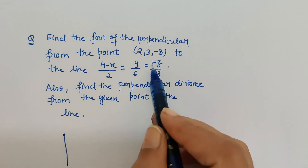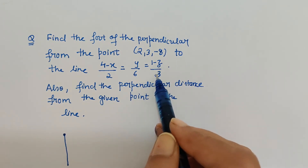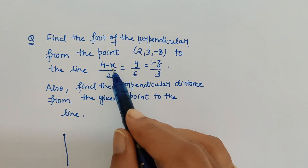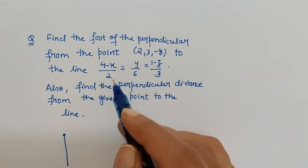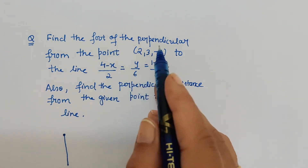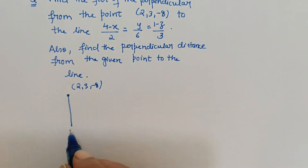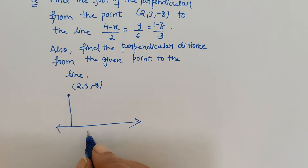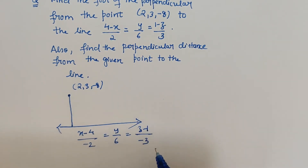To rewrite in standard form, '1 - z' should become 'z - 1', which is possible only by taking the minus sign out, so minus will come in the denominator. Similarly, '4 - x' becomes 'x - 4' with minus 2 in the denominator. So the Cartesian equation of the line becomes (x - 4)/(-2) = y/6 = (z - 1)/(-3).